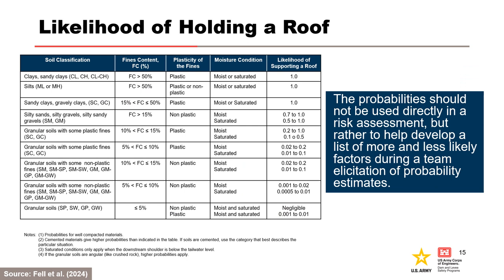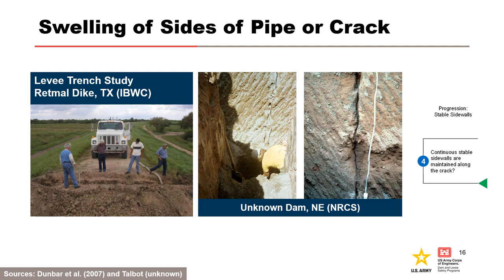The presence of a structure or hard layer, and soil properties, are primary factors to consider in roof formation. This table summarizes the likelihood of holding a roof for various materials. Soils with a fines content greater than 15% are much more likely to support a roof than soils with a fines content less than 15%. The probability should not be used directly in a risk assessment, but rather used to help develop a list of more and less likely factors during a team elicitation of probability estimates. Teams may need to consider the likelihood of the crack not swelling shut for higher plasticity soils, or stable sidewalls being maintained along the crack in lieu of holding a roof.